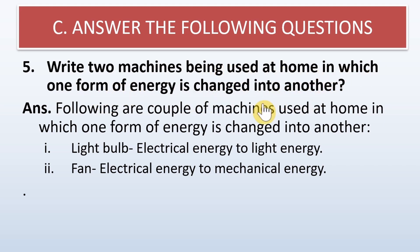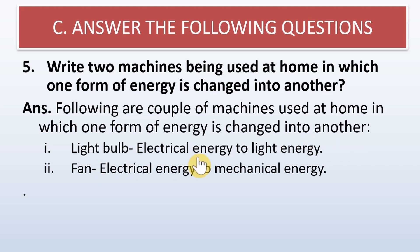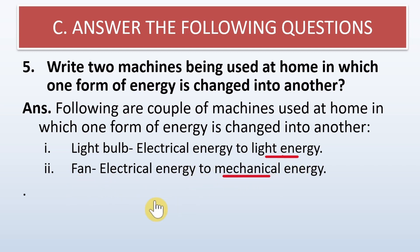Write two machines used at home in which one form of energy is changed into another. First, a light bulb — where electrical energy is converted to light energy. Second, a fan — where electrical energy is converted into mechanical energy. These are two simple examples of machines used at home.